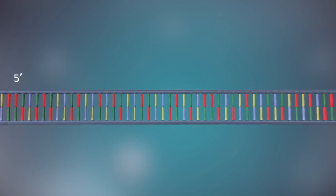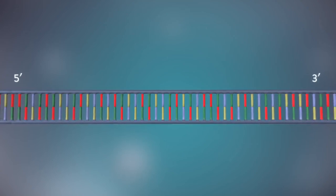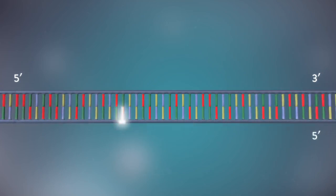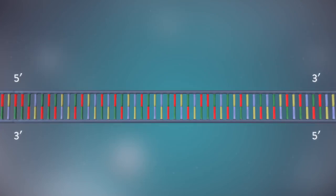Each strand has a 5' end and a 3' end. The two strands run in opposite directions. This determines how each strand of DNA is replicated.